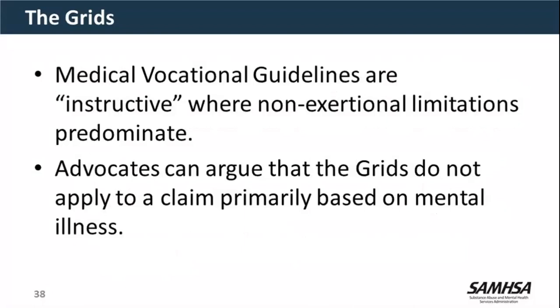When deciding how to use the grids, SSA is always going to look at the grids first. If they can make a finding that the claimant is disabled using a grid rule because of exertional limitations, they're going to use that rule. As an advocate, if we think the claimant is disabled under the grids, we say yes, the grids apply 100% — claim approved. If the claimant is not disabled under the grid rule but has significant non-exertional limitations — for example, from serious mental illness — then we argue that the grid rule does not apply to this case and that more analysis needs to occur.